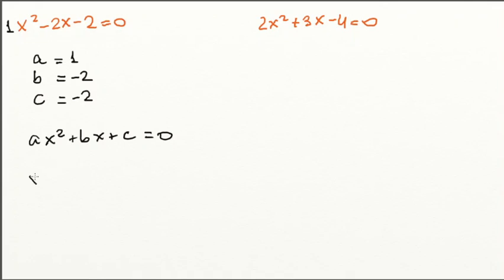Now, if we apply our quadratic formula, this is minus b plus or minus square root of b squared minus 4ac divided by 2a.